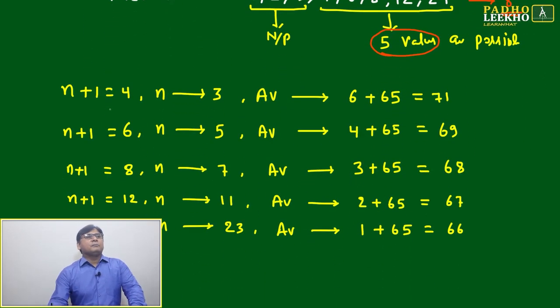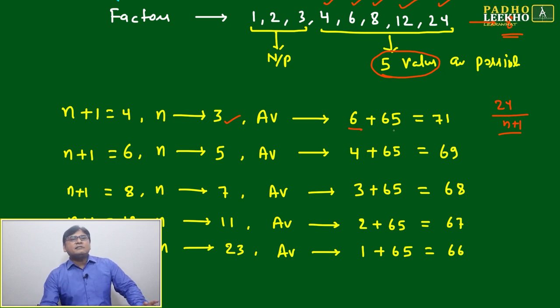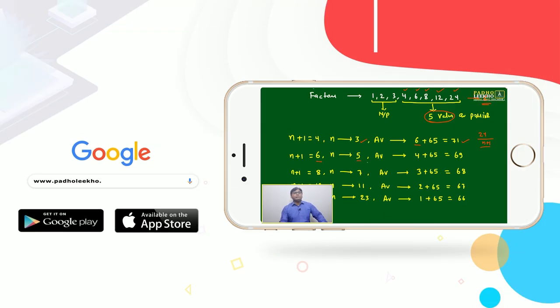Let's look: if n+1 equals 4, then n will be 3, and the average becomes 65 plus 24 by 4, which is 6 plus 65 equals 71. If n+1 is 6, total number of innings is 5, average becomes 4 plus 65 equals 69. Similarly, you get all the values. Five different average values you can get, and all values will be more than 65.